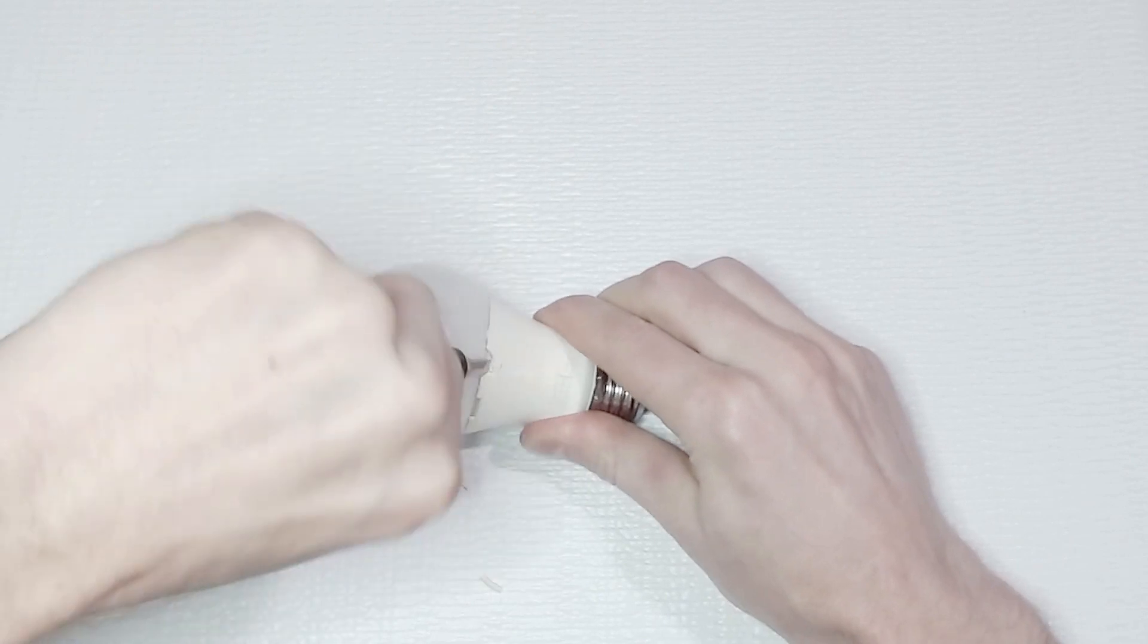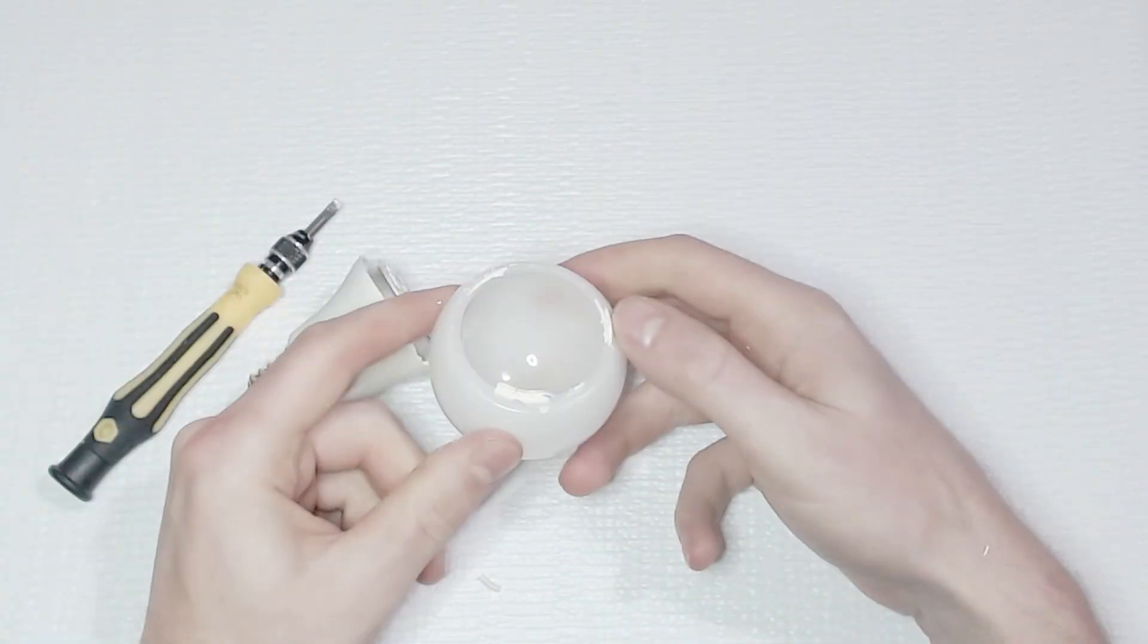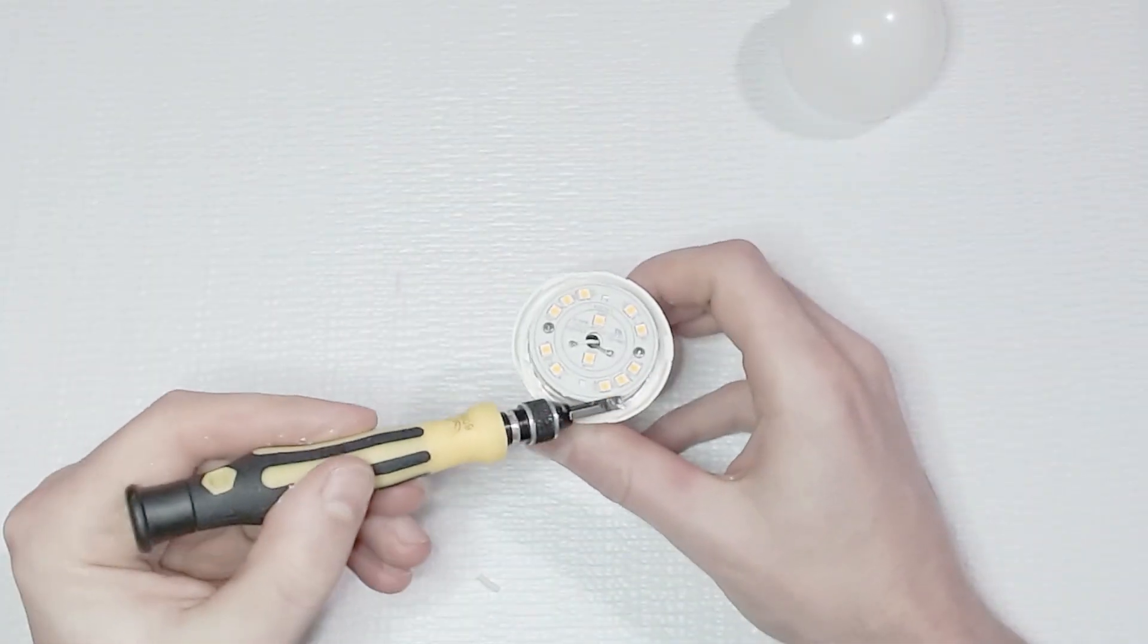We'll go ahead and remove the diffuser globe, exposing the LED array PCB.